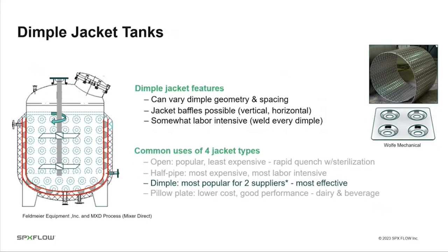The dimple jacket has design variables including dimple geometry, diameter, and height. The dimples are pressed into the plate, the center is punched out, and the plate is overlaid around the tank with welds around each circle to form an effective seal and maintain contact. Despite being somewhat labor-intensive, the dimple jacket is the most popular and most effective of the types sold by the tank vendors I consulted.